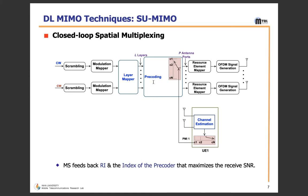The main difference of non-codebook-based precoding from codebook-based precoding is the presence of the Demodulation Reference Signal (DMRS) before precoding. The DMRS allows demodulation and recovery of transmitted layers at the receiver side without explicit receiver knowledge of the precoding applied at the transmitter. The output from P antenna ports is then fed to the Resource Element Mapper.